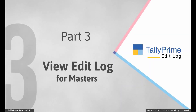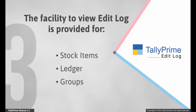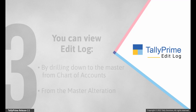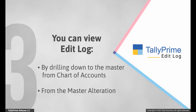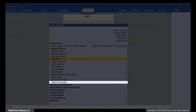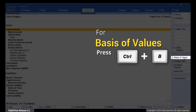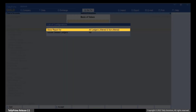Now let us see how to view Edit Log for Masters. In Tally Prime with Edit Log enabled, the facility to view Edit Log is provided for Ledger, Stock Items, and Ledger or Accounting Groups. This is because alteration of only these masters has an impact on your financial data. You can drill down to the respective master from Chart of Accounts and then view Edit Log. You can also view the Edit Log from the Master Alteration screen. Open Chart of Accounts by pressing Alt-G, type or select Chart of Accounts and press Enter. Let's open for Ledgers.